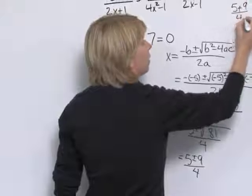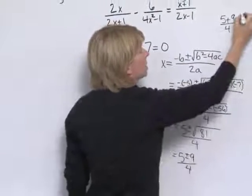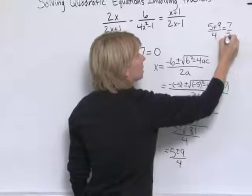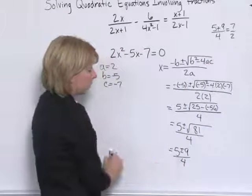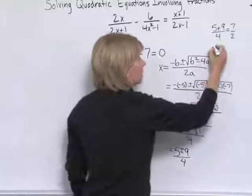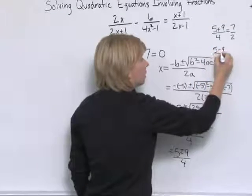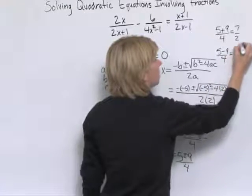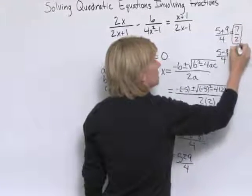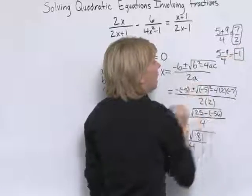5 plus 9 over 4 is 14 over 4, or 7 halves. 5 minus 9 over 4 is negative 4 over 4, or negative 1. So we have our two solutions, 7 halves and negative 1.